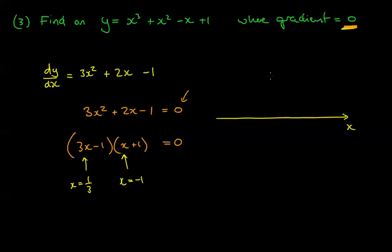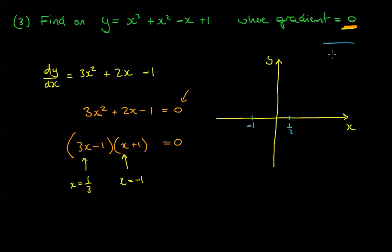On the graph, at x = −1 and x = 1/3, the gradient equals 0. That means the tangent line is flat — horizontal. This happens at peaks or troughs: at a maximum the graph comes up and flattens, and at a minimum it dips and flattens.